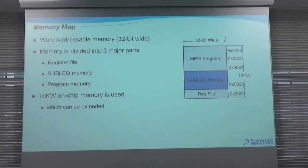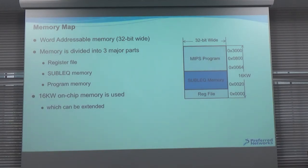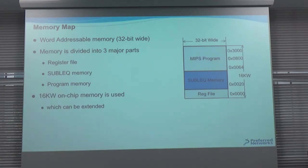The memory map is very simple because the target of this processor is low power applications, not high performance computing. We use one memory where we have the MIPS program generated by the compiler, the sublet memory for the sublet coprocessor, and also a register file. The main motivation for this work is that having a register file increases circuit size and power consumption, so we include everything in the same memory.